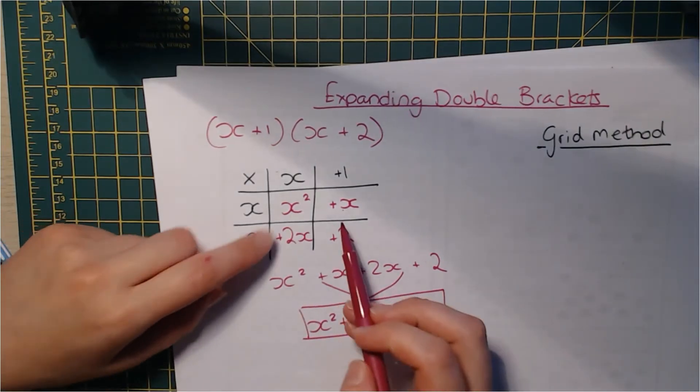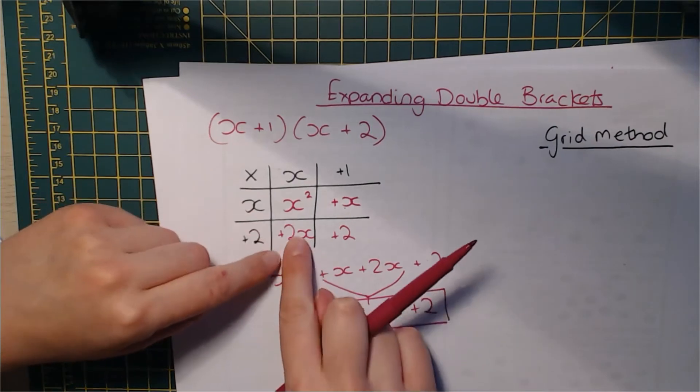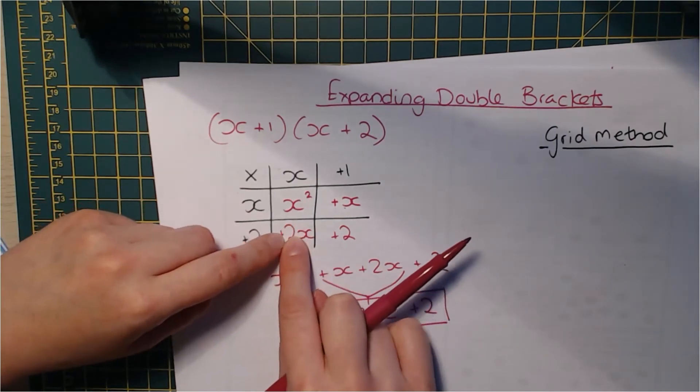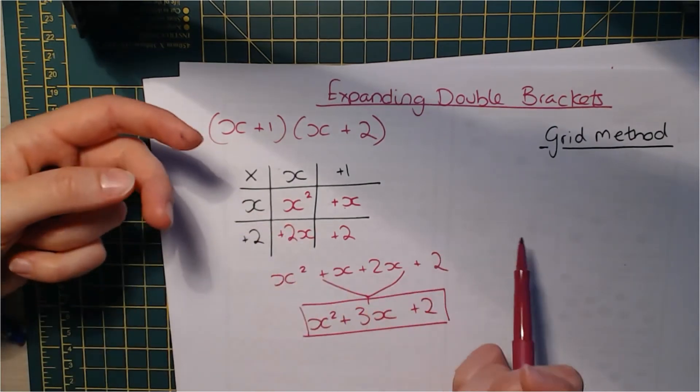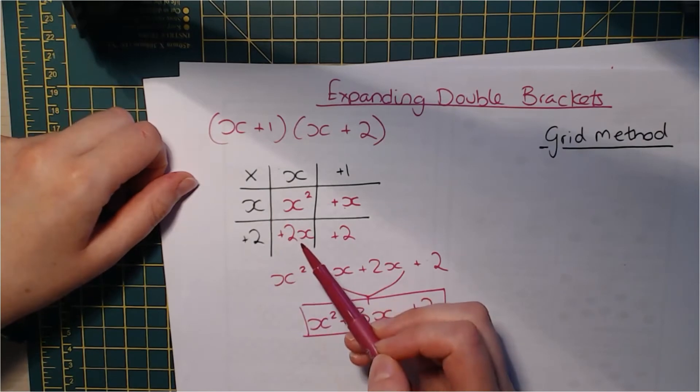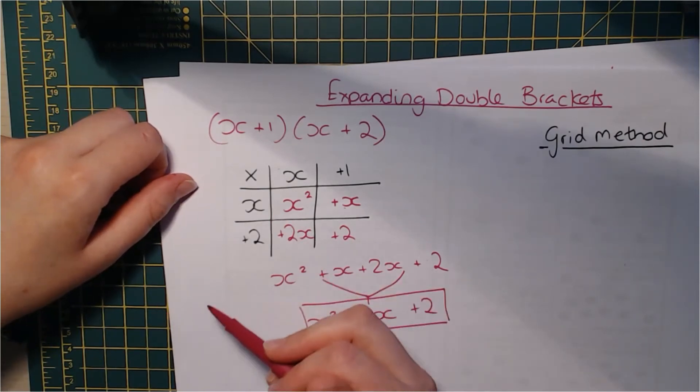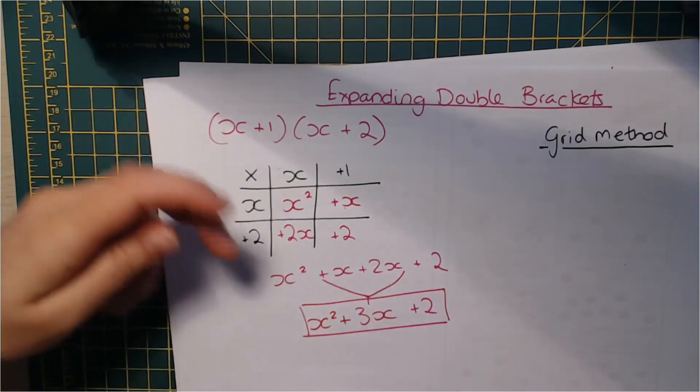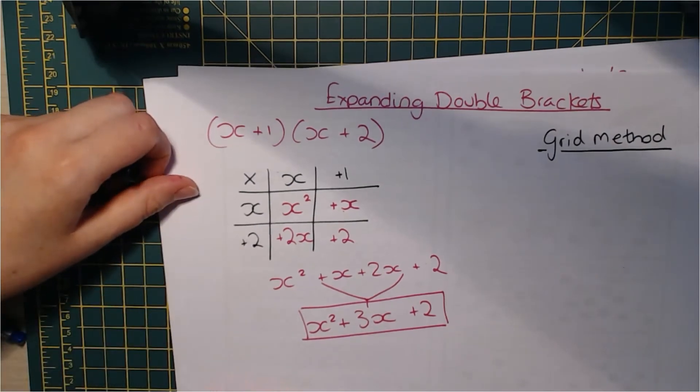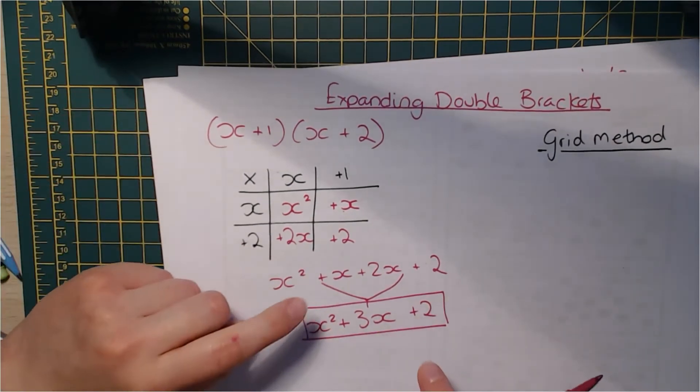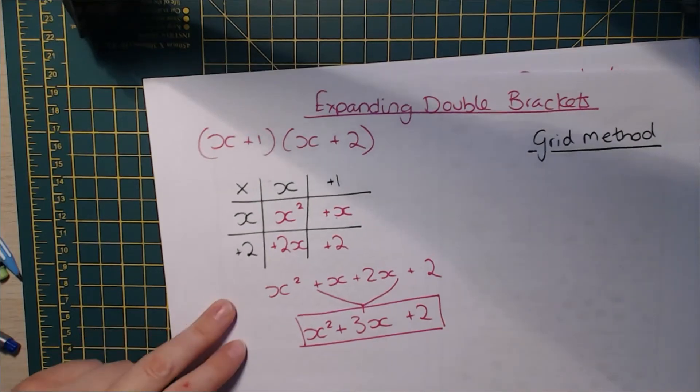So yeah, I really like the grid method because the thing is, if you miss out one of the grid sections here, you can see that, you know, you think, oh, I've not done something because there's a big gap on the paper. Whereas using the FOIL method, it's a little more easy to miss things. So personally, I prefer this one. Okay, so that's the first one. Let's try another one.